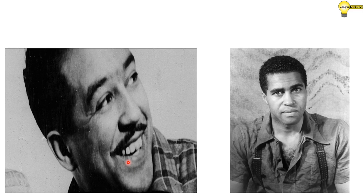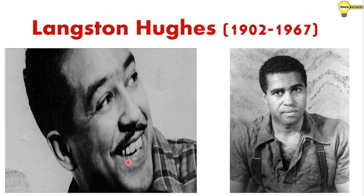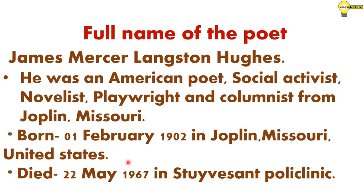We are now watching two pictures from the same lesson. The second poet is Langston Hughes. Now we are going to learn details about this poet. The full name of the poet is James Mercer Langston Hughes. He was an American poet, social activist, novelist, playwright, and columnist from Joplin, Missouri, United States.